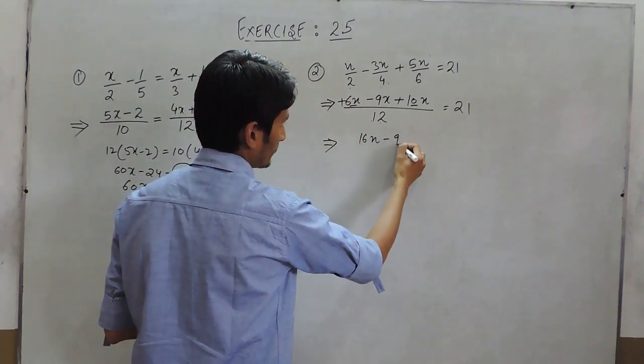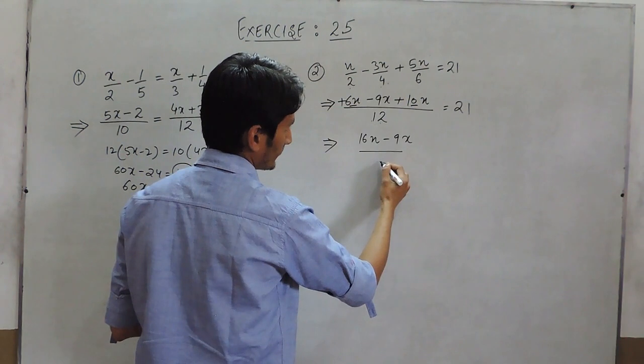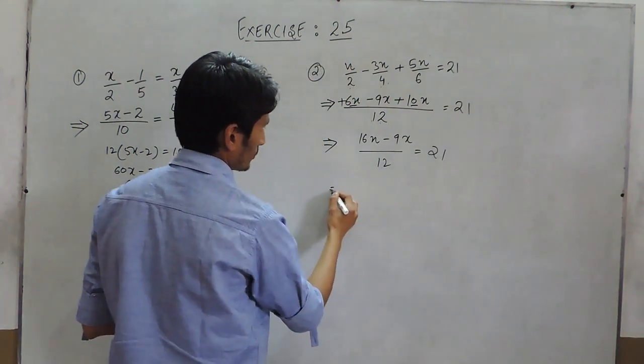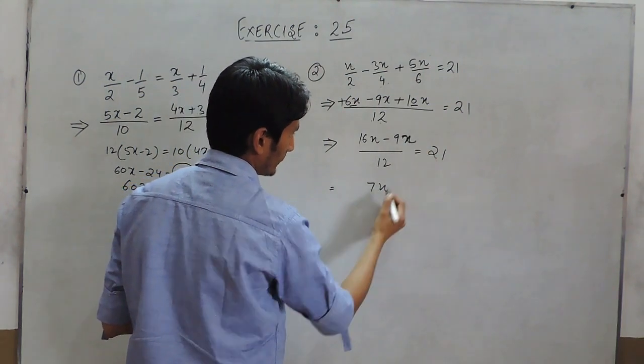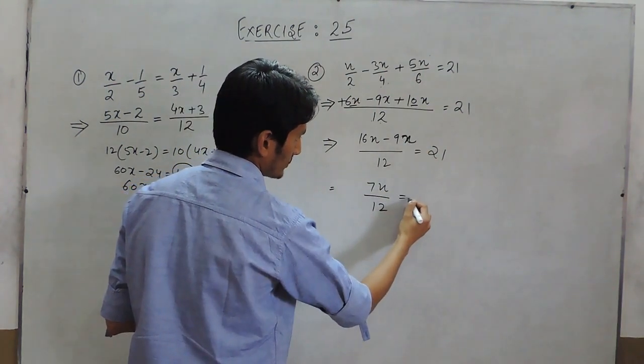This would be 16n minus 9n upon 12. When this is subtracted, it will give 7n upon 12 equals 21.